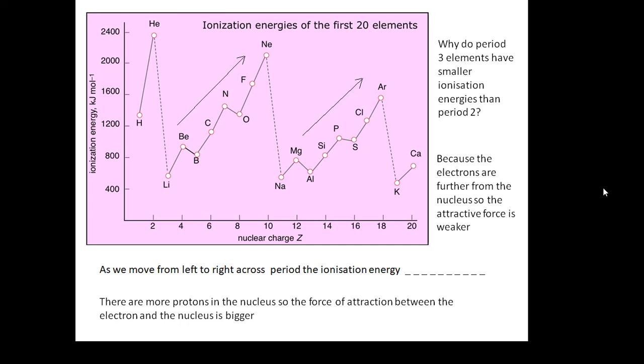So there are two trends which you need to know. As you work your way across a period, the ionisation energy gets bigger. If you work your way down a group, the ionisation energy gets smaller.